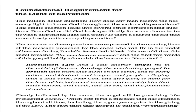Foundational requirement for the light of salvation: the million-dollar question — how does any man receive the necessary light to know God throughout the various dispensations? Does God look specifically for some characteristic when dispensing light and truth? Is there a shared thread that more closely unites every dispensation? The answers to these questions are expressed in the opening lines of the message preached by the angel who will fly in the midst of heaven during Daniel's 70th week. We are told that this angel preaches the everlasting gospel, and the first two words of this gospel boldly admonish the hearers to fear God. Revelation 14:6-7: 'And I saw another angel fly in the midst of heaven, having the everlasting gospel to preach unto them that dwell on the earth, and to every nation, and kindred, and tongue, and people, saying with a loud voice, Fear God, and give glory to him, for the hour of his judgment is come, and worship him that made heaven, and earth, and the sea, and the fountains of waters.'